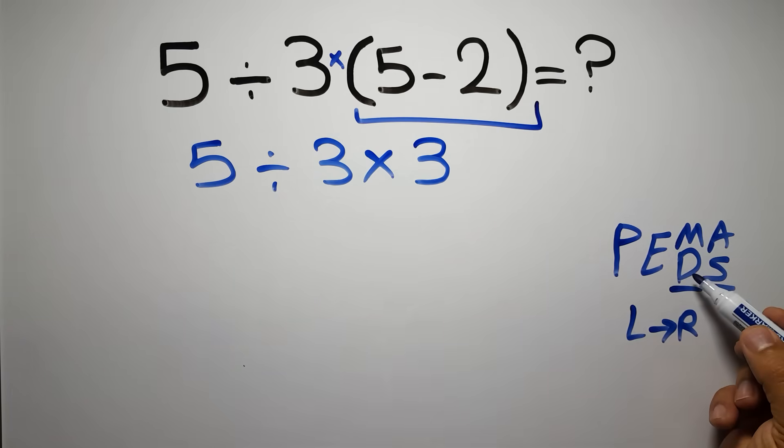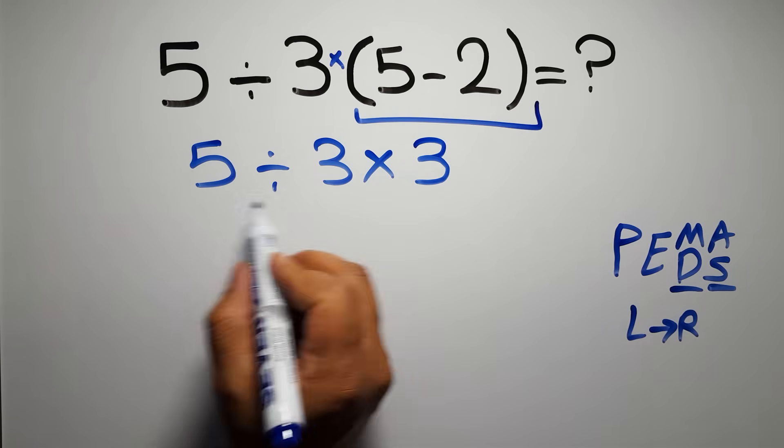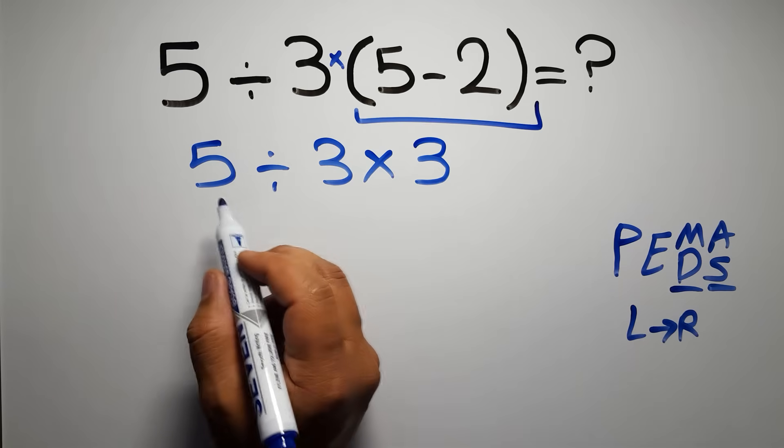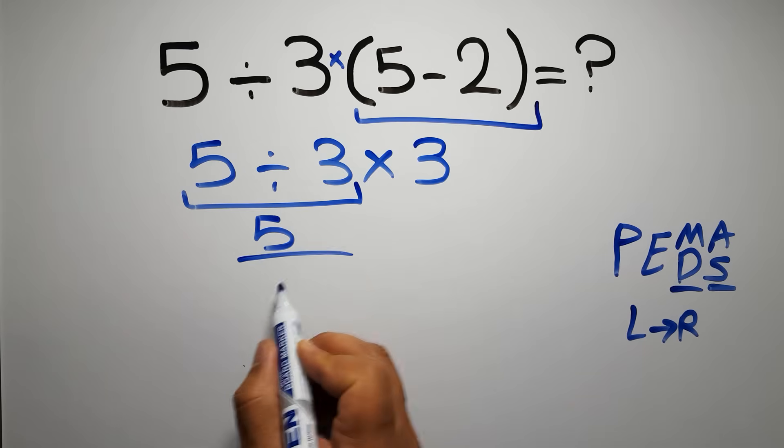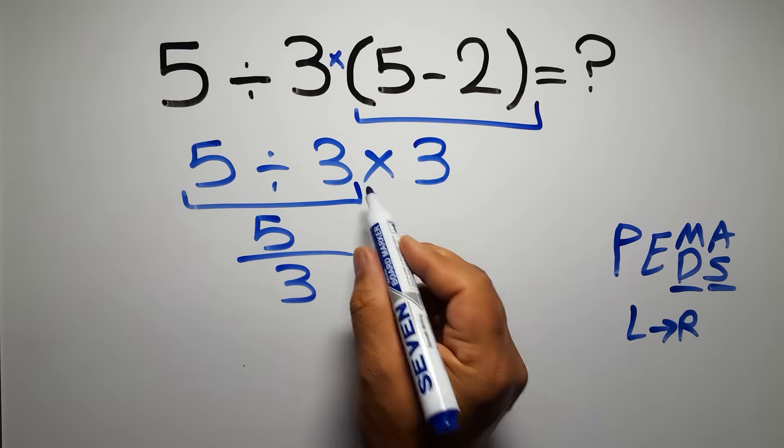As I said, multiplication and division have equal priority and we have to work from left to right. So here first we have to do this division. 5 divided by 3 can be written as 5/3, and here we have times 3.